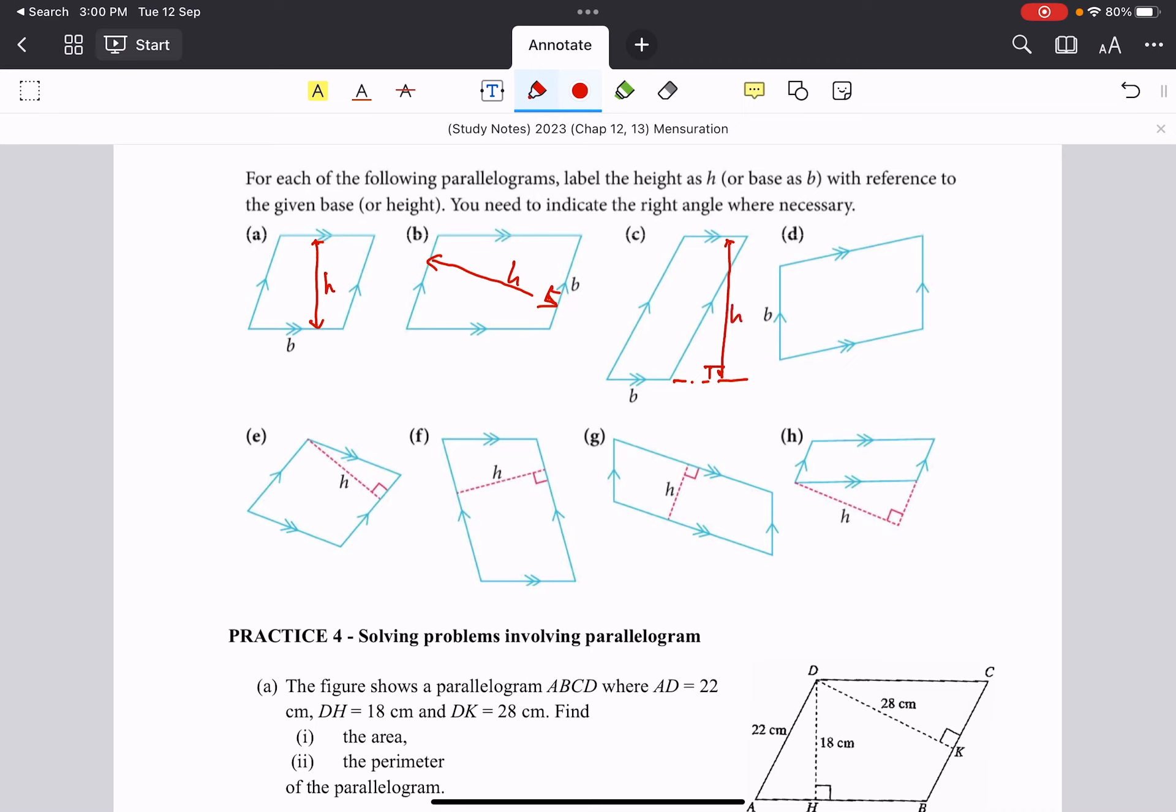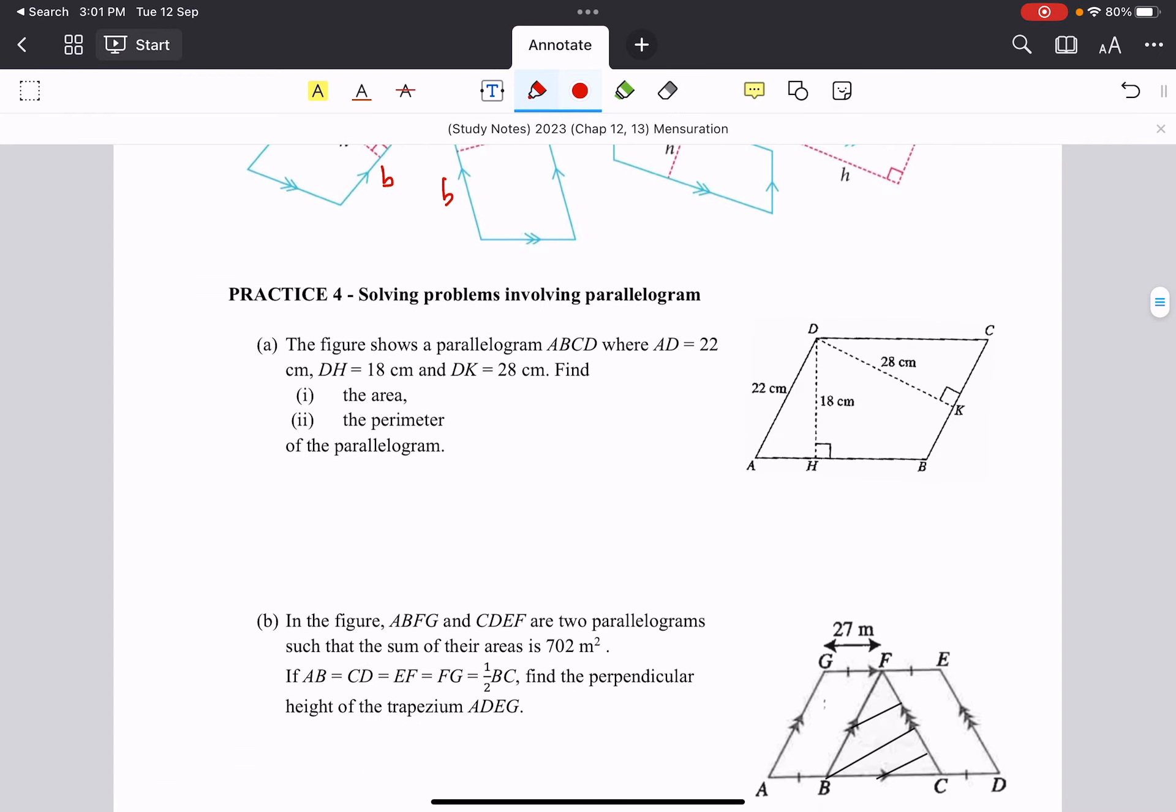So similarly, down here, if I have 90 degrees, then this will be my height. Now for the second row, if given the height, what is the base? Well, 90 degrees to the height. This is my base. This will be my base. And over here, this is my base. So it's not difficult to identify. So once we get used to this idea, we can start to solve some very basic questions with regards to parallelogram.